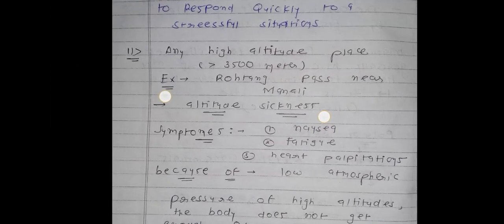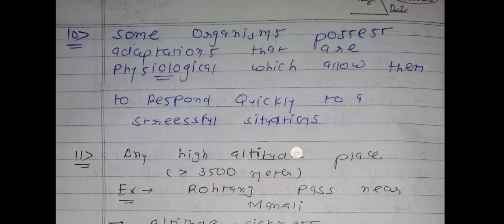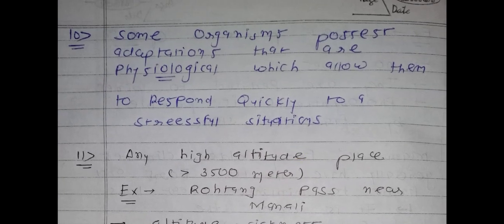Point ten: some organisms possess adaptations that are physiological, which allow them to respond quickly to stressful conditions. This means some organisms have the ability to give a quick response against any extreme or stressful condition — many organisms have this natural ability to create or perform adaptation.